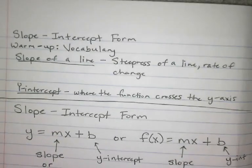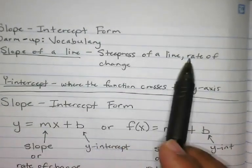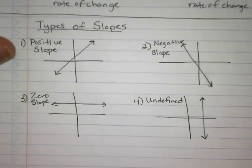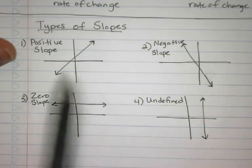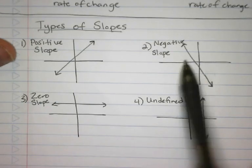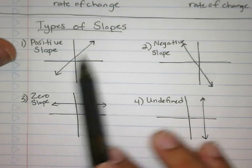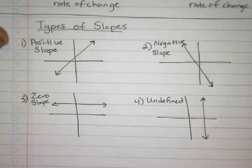So just to go back real quick: we start with the warm-up. We define the slope — the slope of a line is the steepness of a line, it's the rate of change. If we look at these slopes, they can be flatter, they can be more steep, they can be towards the negative side or towards the positive side. There are four different types.